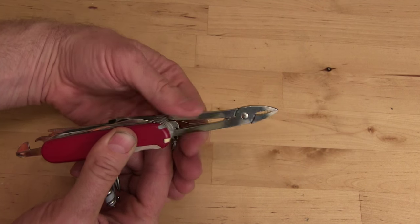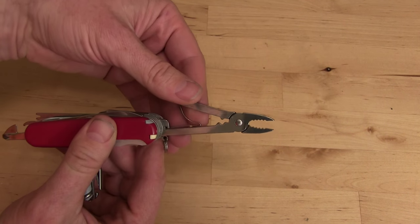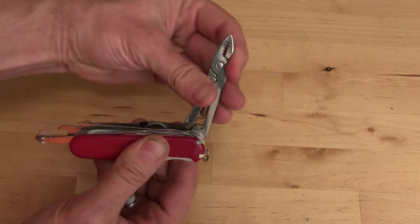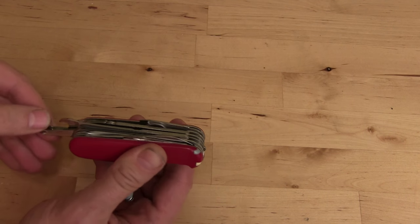And you've got pliers, these are pretty thick. And wire crimper also in the pliers there. So that's a combo tool.